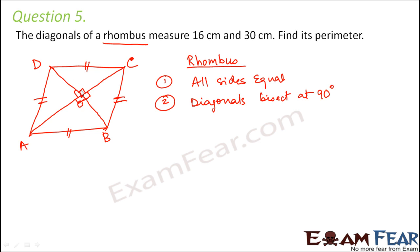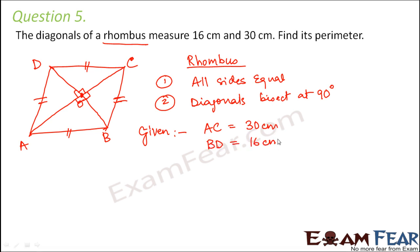That means each of these triangles is a right-angled triangle, whether we talk about triangle AOD or triangle COD. In the question, AC is given as 30 centimeters and BD is given as 16 centimeters — so both diagonals are given. We have to find the perimeter, meaning the boundary. Since all four sides are equal, if we find one side we can multiply it by 4 to find the perimeter.